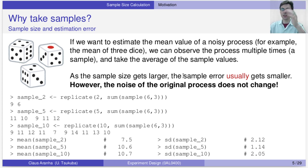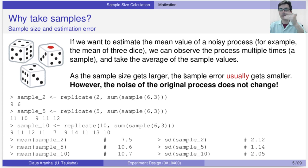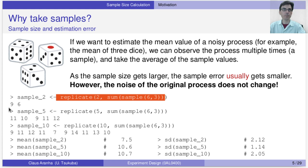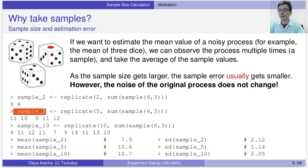As the sample gets larger, the sample error usually gets smaller. However, the noise of the original process does not change. So there is a point where, if your sample size is very large, you will still have the influence of the noise of the process. For example, we calculate a sample of size two — we throw three dice two times and get the results. I use this command to generate two dice throws. The first was nine, the second was six. Then I throw the dice five times and get: 10, 11, 9, 11, 12.